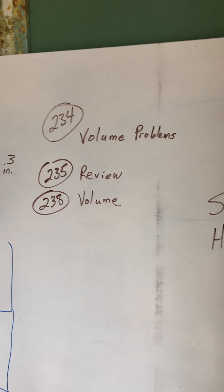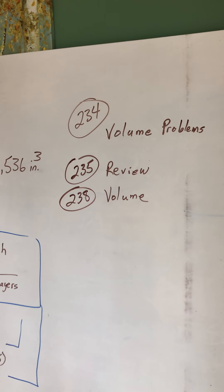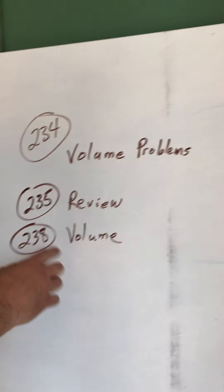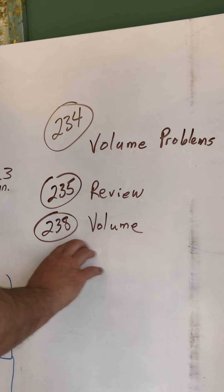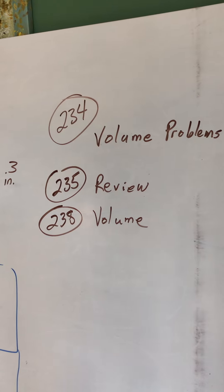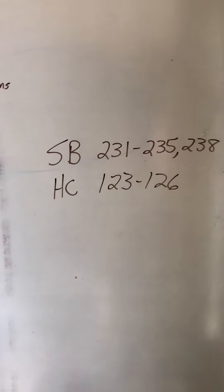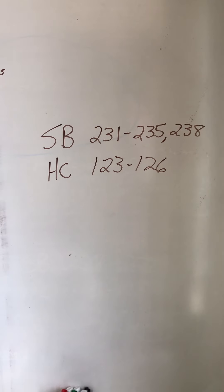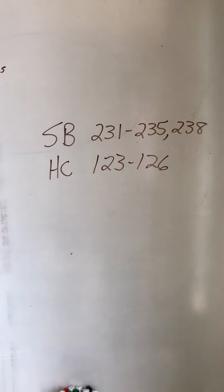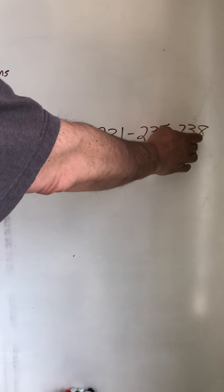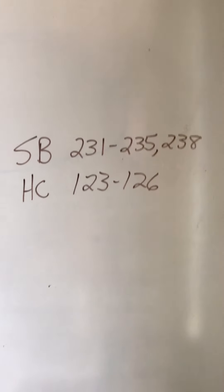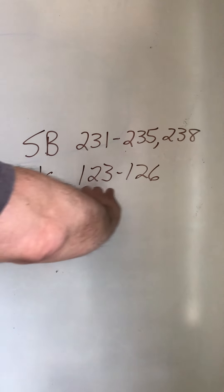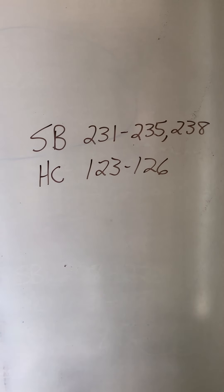234 is just volume problems. Just follow along everything we did, and there'll be no problem. 235 is a general review, and then you're going to skip the workplace for 236, 237. You're going to go to 238, and it's more volume problems. Now, if you take a look at the homework for today's Wednesday, so you have until Sunday, you have 231 through 235. You are skipping the workplace, 236, 237, and you're going then straight to 238. So, you're going to stop student book at 238. Home connections, this is all review. Like I said at the beginning of the video, you'll look at this. It's all review, 123 through 126.